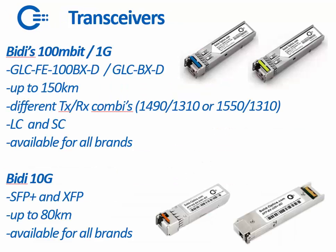These optics are available for BD at 100 Mbit and 1 Gig. The typical Cisco names are the GLC-FE-100BXD for 100 Mbit and the GLC-BXD for 1 Gig. We can deliver them up to 150 kilometers in different TX-RX combinations. The standard wavelengths for 1 Gig are 1490-1310, and for 100 Mbit it's 1550-1310, but we can deliver other combinations. The standard connector for Cisco is LC, but we can also deliver them with an SC connector.